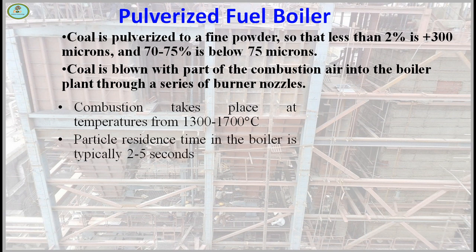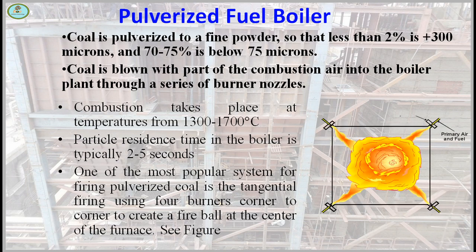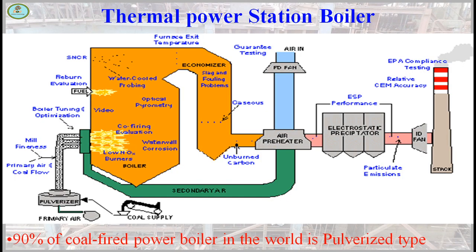Particle residence time in the boiler is typically two to five seconds. One of the most popular systems for firing pulverized coal is tangential firing, using four corner-to-corner burners to create a fireball at the center of the furnace, as shown in the figure. This type of tangential firing is used in PF boilers at thermal power plant stations.